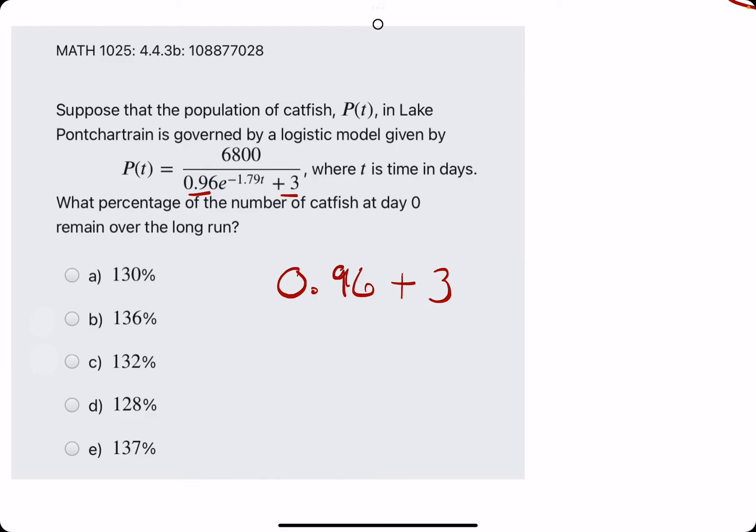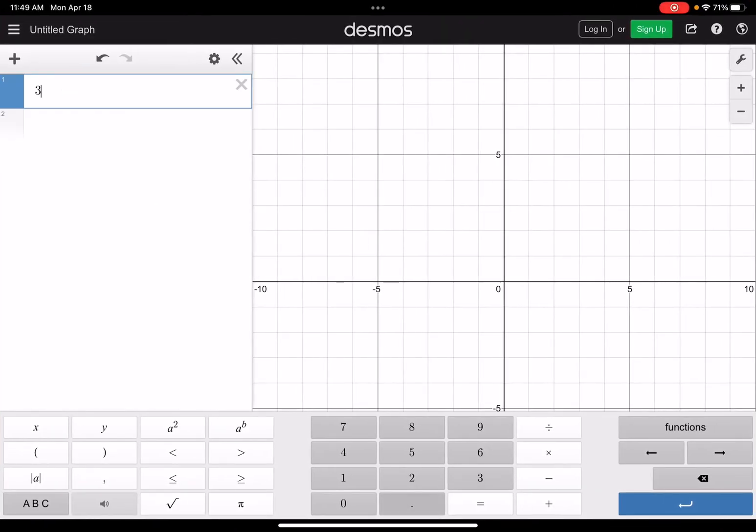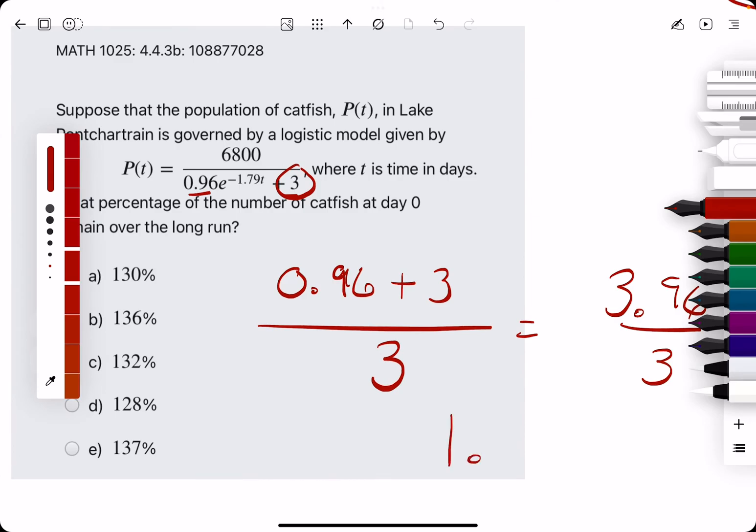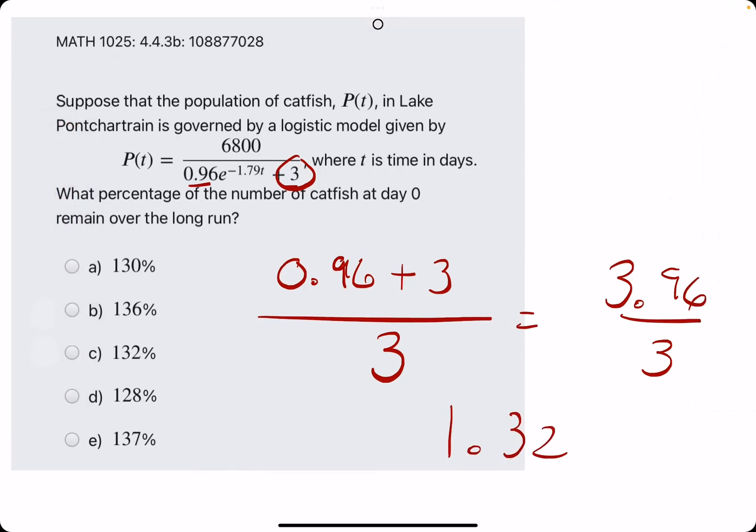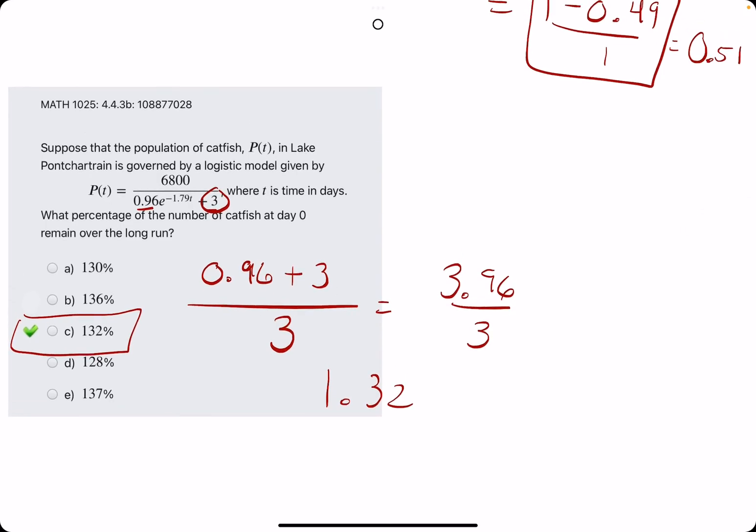in this case, addition, 0.96 plus 3, and then we divide by the number that's not attached to the e term. We have 3.96 divided by 3. And, we get 1.32. 1.32 as a percentage is 132. And, that's it.